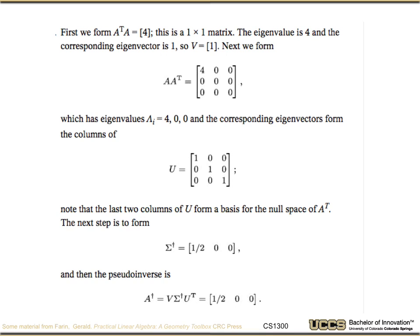Next, to go after U, we form AA transpose. So this gives us a much bigger matrix this time. It gives us the matrix [4, 0, 0; 0, 0, 0; 0, 0, 0]. And this has eigenvalues of 4, 0, and 0. And the corresponding eigenvectors, the first one is [1, 0, 0]. The other two are any arbitrary basis for the remaining R2 space, but we're just going to make them into the identity vectors. So then we get the identity matrix for U. They form anything that forms a null space, though, would have been allowed, as long as they're orthonormal.